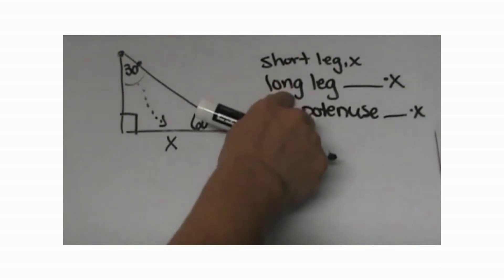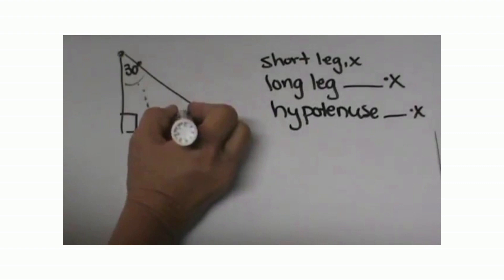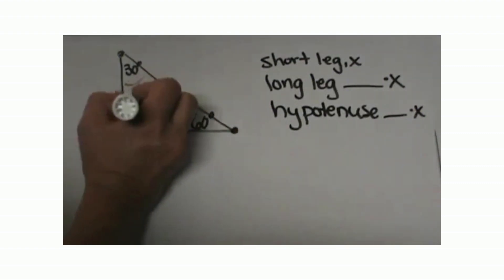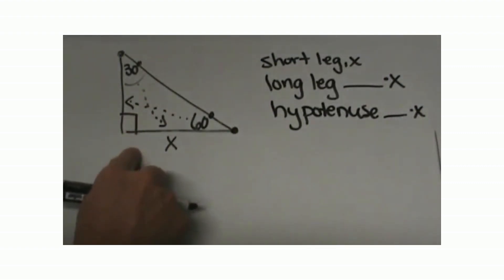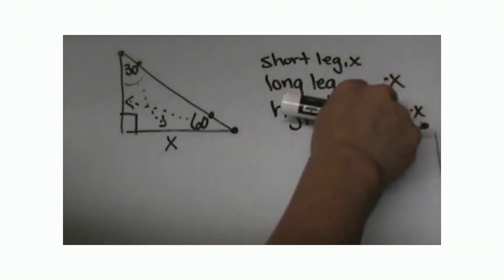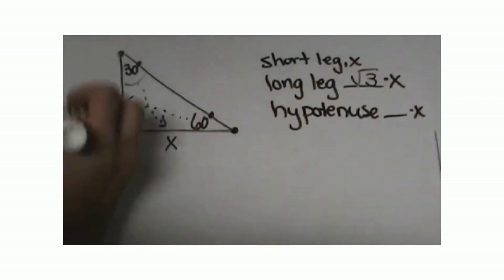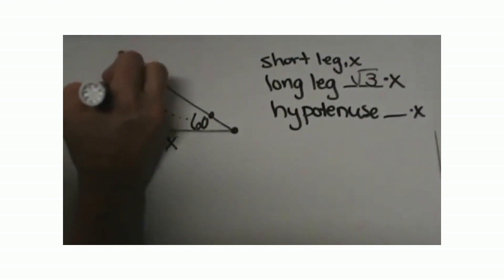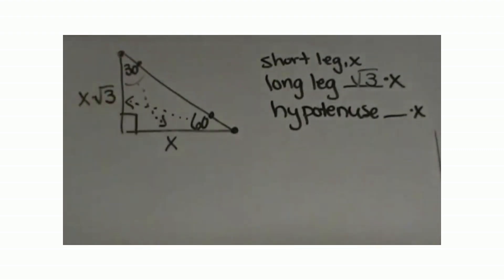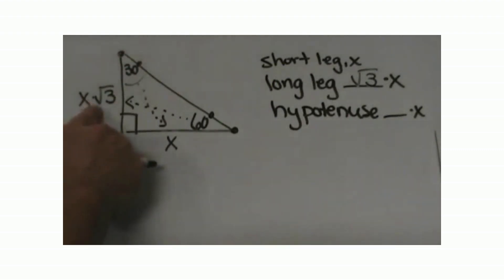Your long leg is the leg that is opposite the 60 degree angle. We are going to label that with its pattern. The pattern is you take x and you multiply it by the square root of 3. I am going to take x and I am going to reverse that order and put x square root 3 as my longer leg.